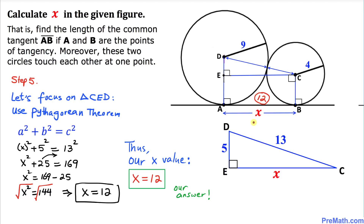So the length of the common tangent AB is 12 units. That is our final answer. Thanks for watching, and please don't forget to subscribe to my channel for more exciting videos. Bye!